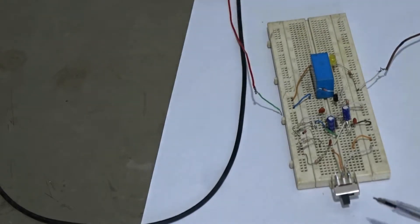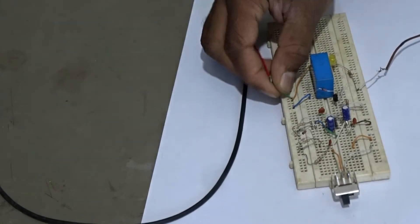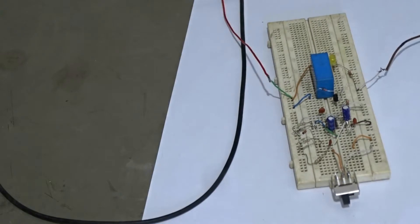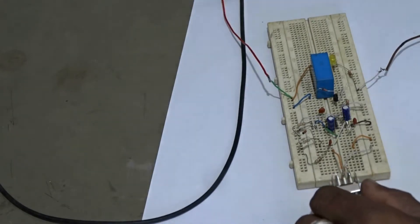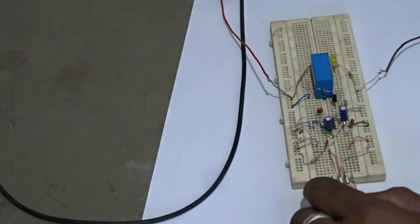First, our switch is now in the off position. When we supply power to the circuit, there is no momentary reaction in this relay. When we move the switch to the on position, that relay turns on for a moment.